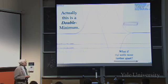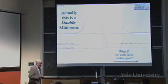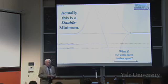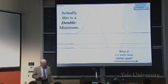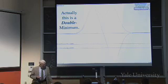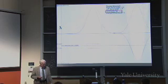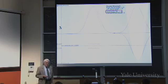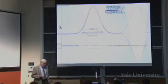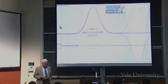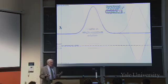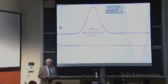What would happen if we moved the wells further apart? Here you see the separation of the two wells is 0.6 angstroms. Suppose we moved it apart to be 1.3 angstroms. Now we have blue and red solutions, but you notice the blue solution and the red solution are the same on the left, and they're both the same as the single minimum. So if you get the wells far enough apart, they look like single minima with respect to their wave function.